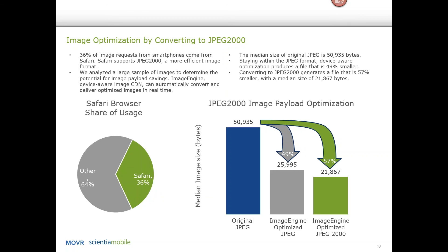We went through all the ways not to do it with JPEG 2000, because in many cases an image is just ruined when you don't know which settings to use. But once you figure out all the variables to tweak, it's a very, very efficient format. As we see on the chart here, if we have an original JPEG file of 50K, the JPEG-optimized size would be close to 26K — which is really well optimized, state-of-the-art image optimization. But with JPEG 2000, this file is down to almost 22K, which is a 57% reduction compared to a 49% reduction with JPEG.